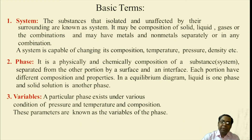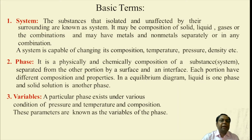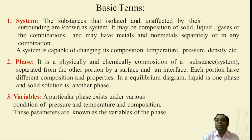Whenever we discuss about the phase diagram, some basic terms will appear which we must know. Number one is system. A system is a substance or substances that are isolated and unaffected by their surroundings. It may be a composition of solid, liquid, gases or combinations, and may have metals and non-metals separately or in any combination.